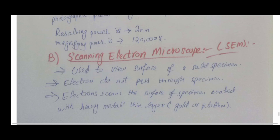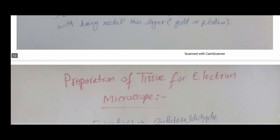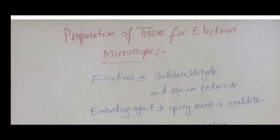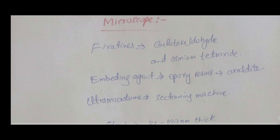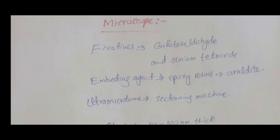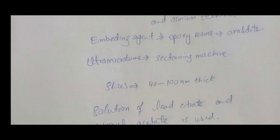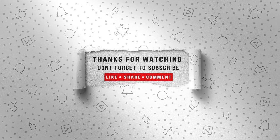The second type is the scanning electron microscope (SEM), used to view the surface of solid specimens. Electrons do not pass through the specimen — they only scan the surface. The solid specimen is coated with heavy metals like gold or palladium. For electron microscope specimen preparation, the same four steps are followed: fixation, embedding, sectioning, and staining. For fixation we use glutaraldehyde and osmium tetroxide; for embedding we use epoxy resins; and for sectioning, the machine used is an ultramicrotome. Section size ranges from 40 to 100 nanometers.